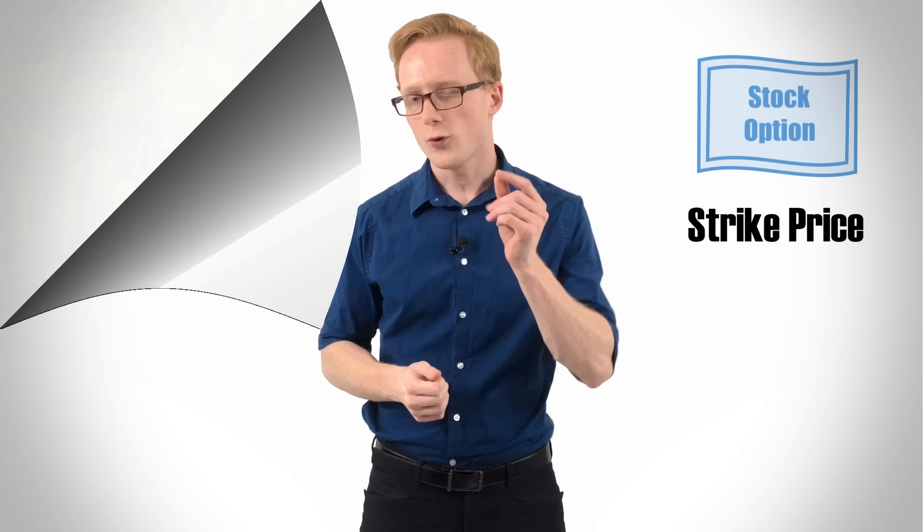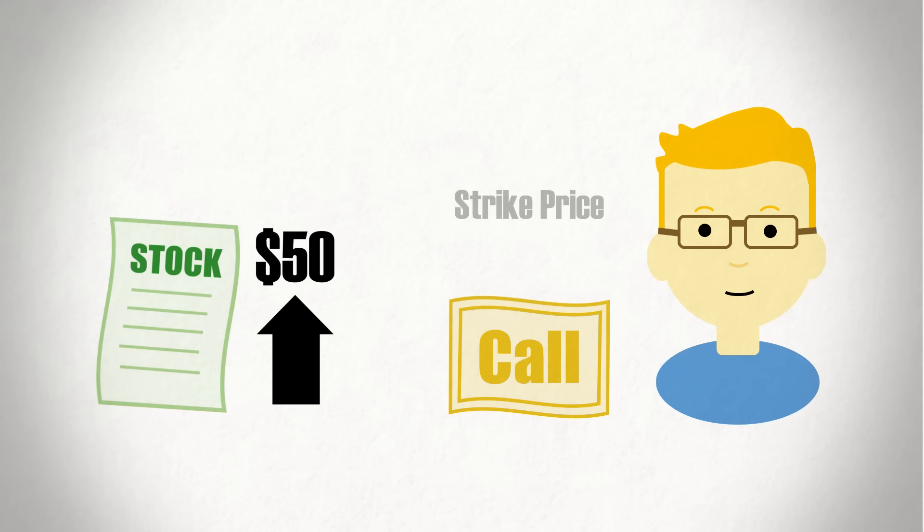For example, if a stock's price rises to $50 but you have a call option with a strike price of $40, you can make $10 by exercising your option and buying the stock at $40. Simple enough, right?